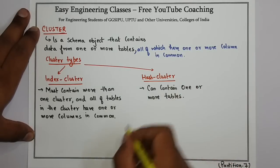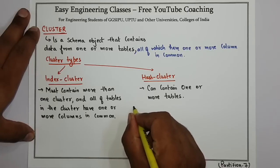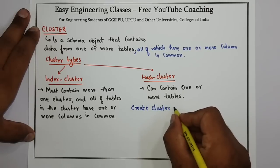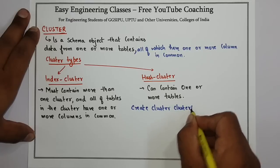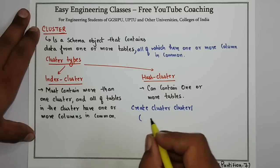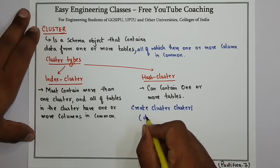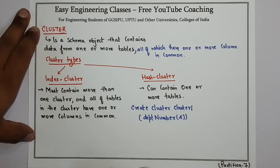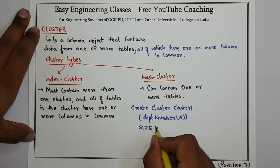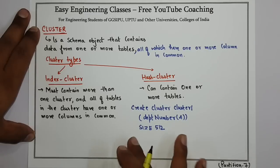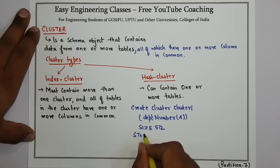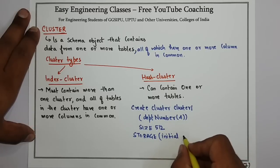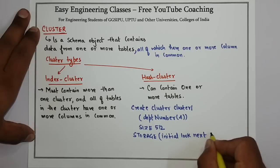Now we will see how we can create a cluster using commands. To create a cluster, you write: Create cluster, then the name of the cluster — suppose cluster1 — then specify the cluster key column, here given as department, the data type of the cluster key column, the size of the cluster, and the storage parameter values. The initial value is set as 100k and the next value will be 50k.